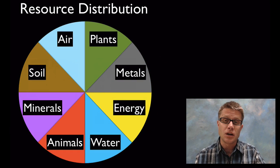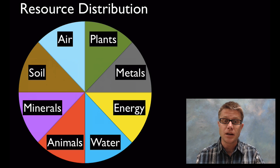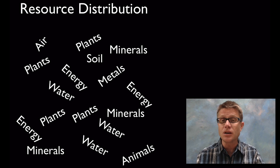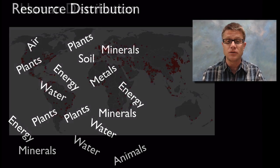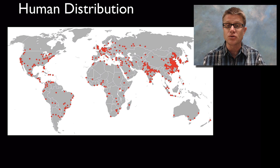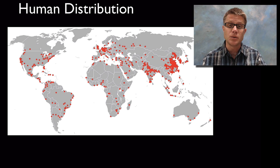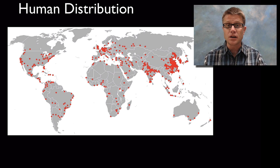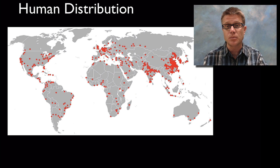Another thing you should understand about natural resources is that they're not uniformly distributed on our planet — they're going to be mixed up. Where do humans live? We're living where we can get as many resources as we can possibly find, but we're not going to have all the resources there. So we have to trade and ship those around on our planet.